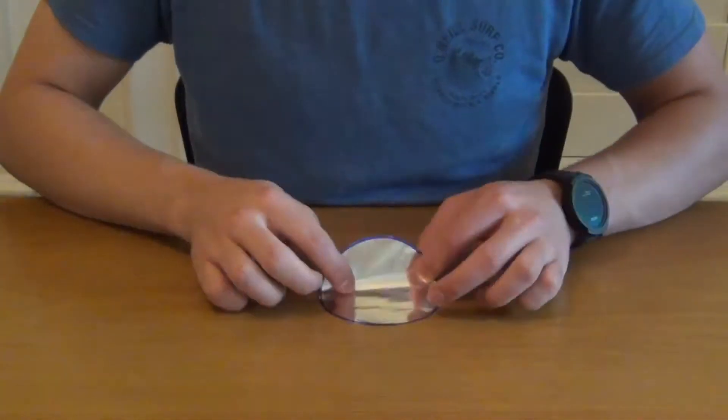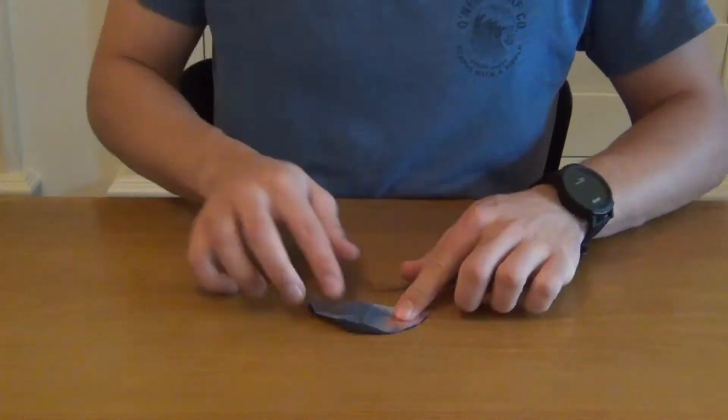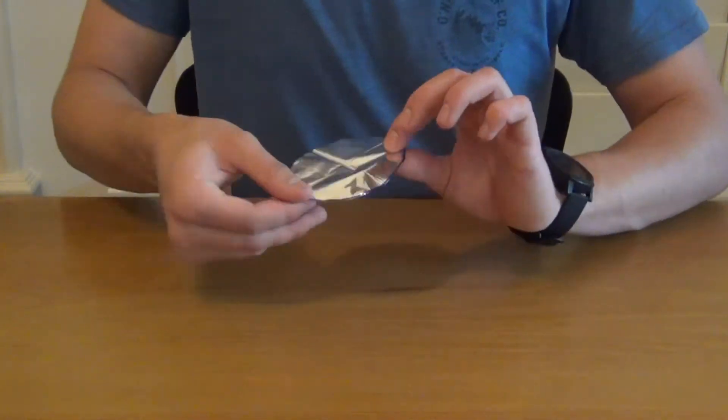Then, fold your foil circle in half, unfold it, and then fold it again. This will help you find the center of the circle later on in the experiment.